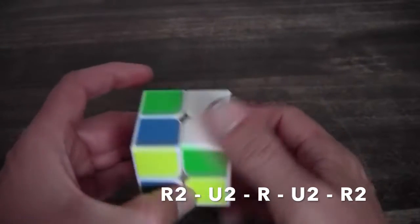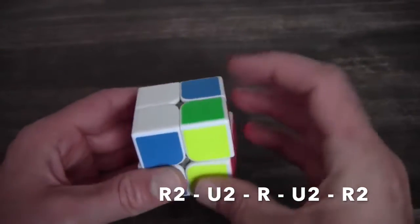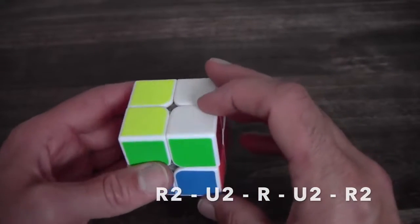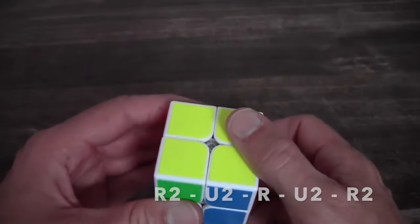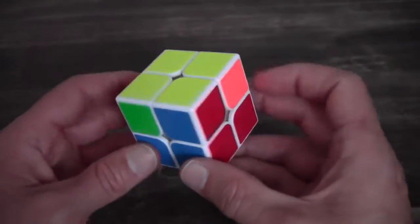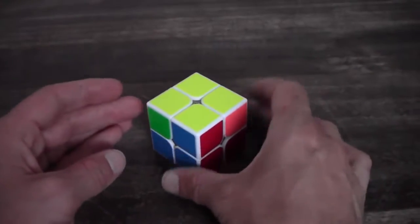R2 U2 R U2 R2. So as you can see you have just solved the yellow square. I'm going to continue to the next case.